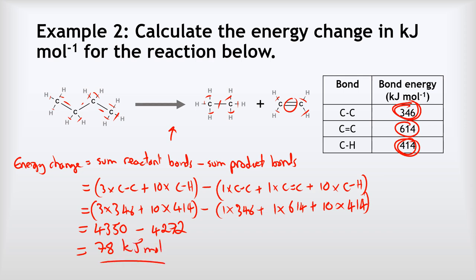The more mathematically aware of you might notice some shortcuts. Because we've got ten carbon-hydrogen bonds on the left and ten on the right, we could cancel those out as they have no overall effect. Equally, with three carbon-carbons on the left and one on the right, we could simplify the whole calculation to just two carbon-carbons minus one carbon-carbon double bond. It's quicker but requires more confidence — if unsure, just do it the long way; you won't gain or lose marks either way.